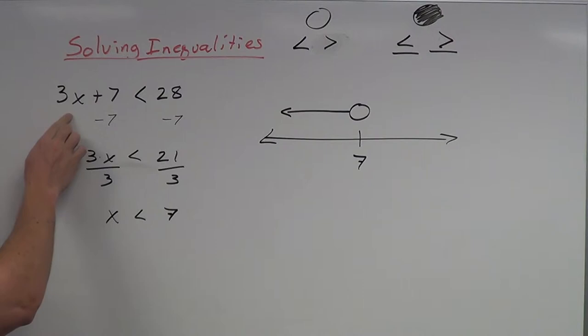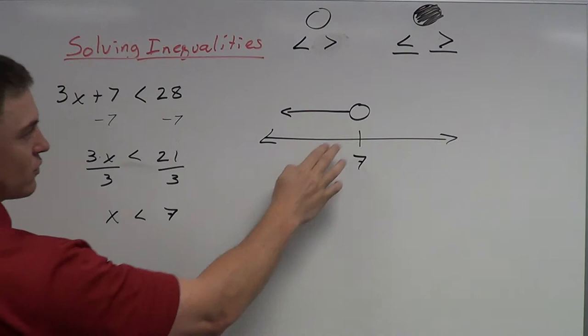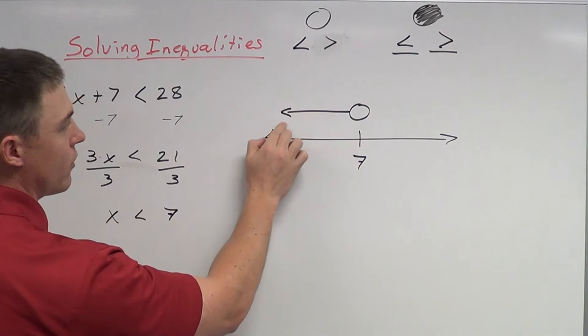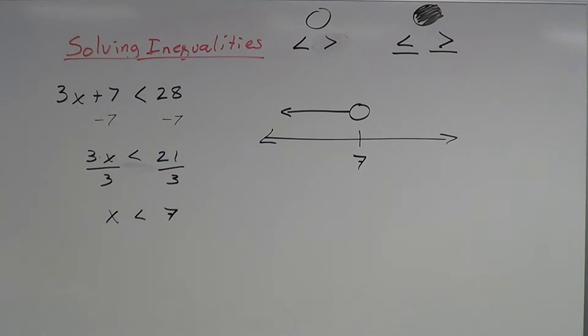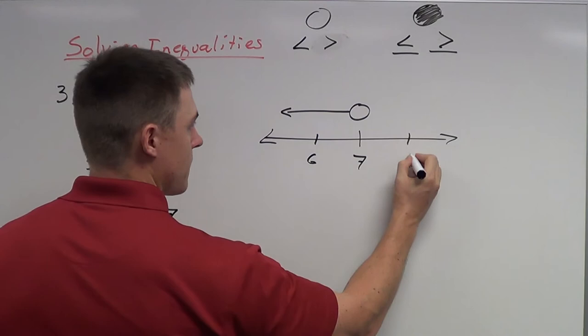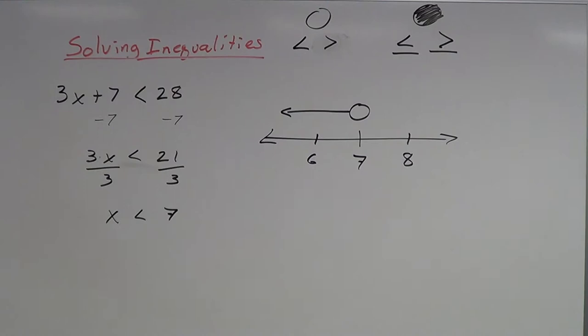In this case, we do not include 7 — as we saw, if I plug in 7, I get 28, but I want something smaller than 28. Open circle to show that 7 doesn't work. But anything smaller than that works: 6.9, 6.8, 6.7, all the way down — 6, 5, 4, 3, 2, 1, 0, negative 1, negative 2. All those numbers in that direction on the number line are going to work.